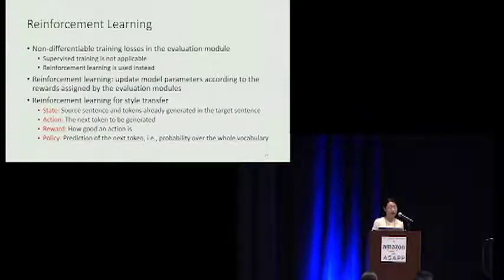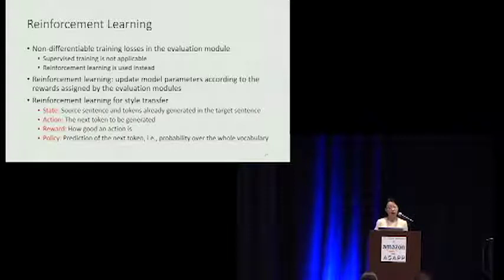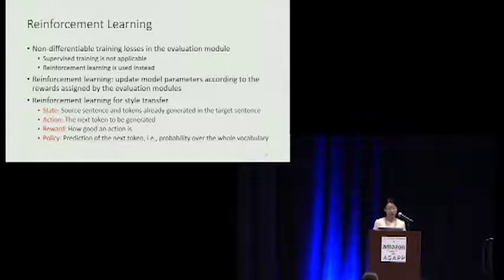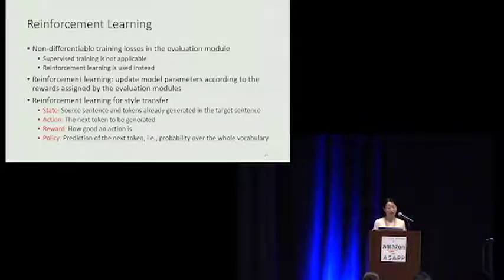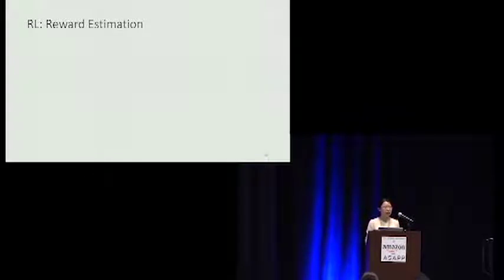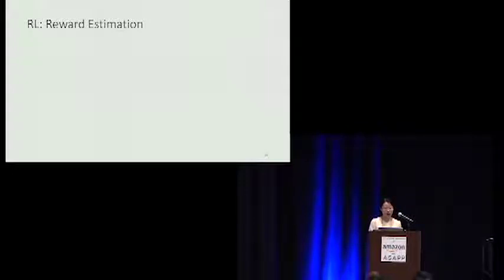In our model, the state is the source sentence plus the target tokens generated so far. The action refers to the next token the generator wants to add to the target sequence. The reward is the feedback given by the three evaluators, which evaluate the quality of the action taken. The policy, given by the generator, is a probability distribution over the entire vocabulary for the next token. Given the source sentence, the generator produces the target sequence token by token, and the evaluators give feedback to improve the generation.